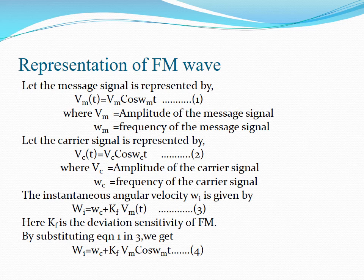Next, we see the representation of the FM wave. We are considering the message as well as the carrier signal as a sinusoidal signal. Therefore, the message signal is represented by Vm(t) = Vm·cos(ωm·t), where Vm is the amplitude of the message signal and ωm is the frequency of the message signal. The carrier signal is represented by Vc(t) = Vc·cos(ωc·t), where Vc is the amplitude of the carrier signal and ωc is the frequency of the carrier signal.